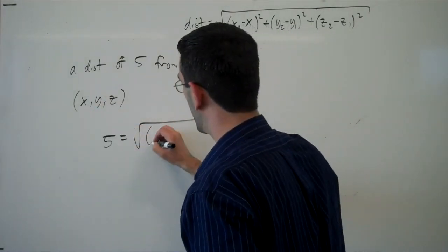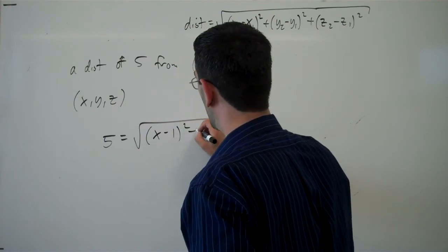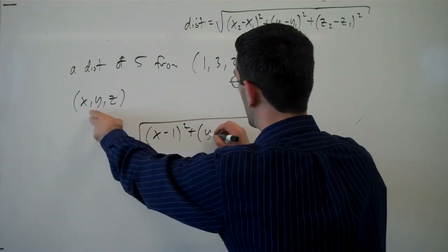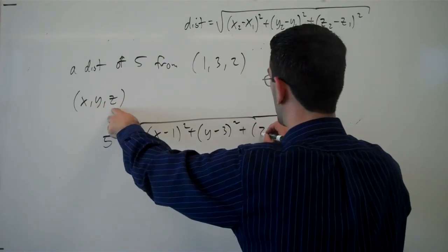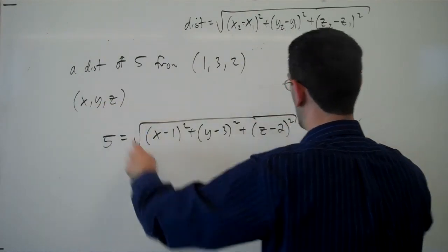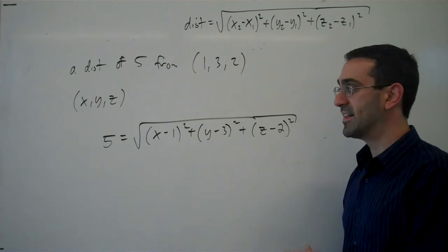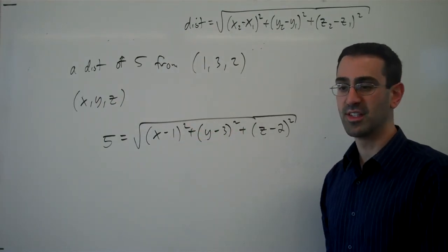So, we're going to have a difference of the x's squared, difference of the y's squared, plus the difference of the z's squared. And there is an equation for this sphere.